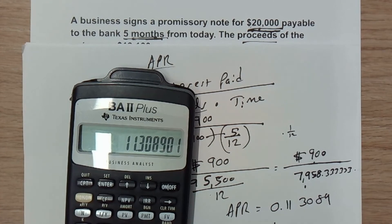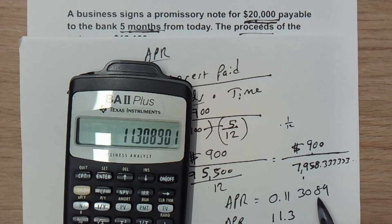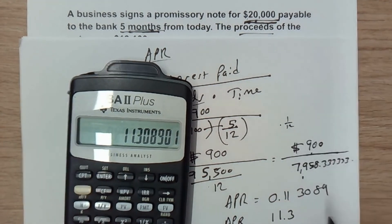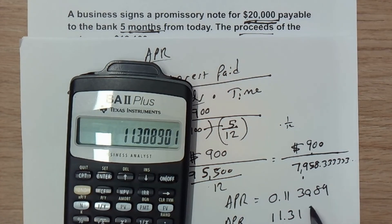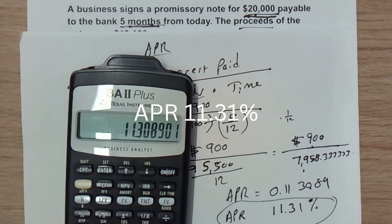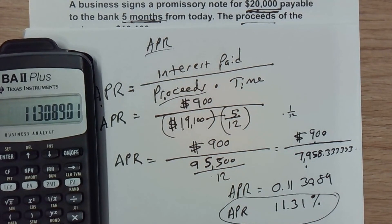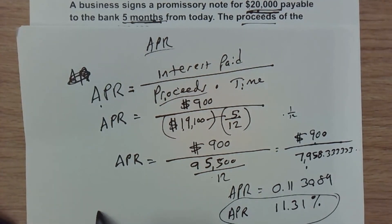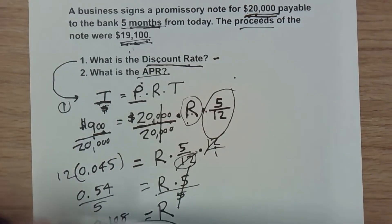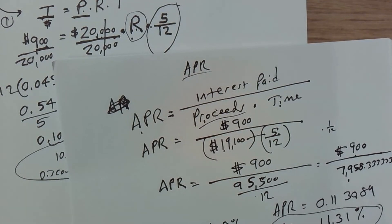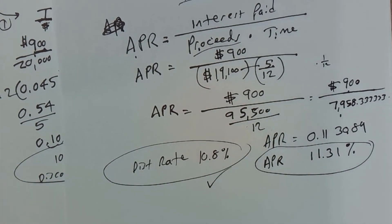So the APR is 11.31% and the discount rate was 10.8%, meaning the APR is higher — which is exactly what we expected. That's a good indication that we got the right answer. If you're finding this content helpful, please smash the like button and subscribe so you won't miss another video. Put any questions or additional problem types you want in the comments. Until next time, keep your grade alive and subscribe.